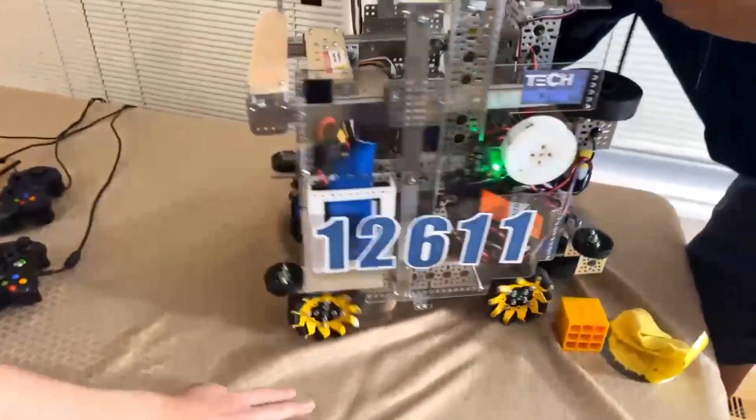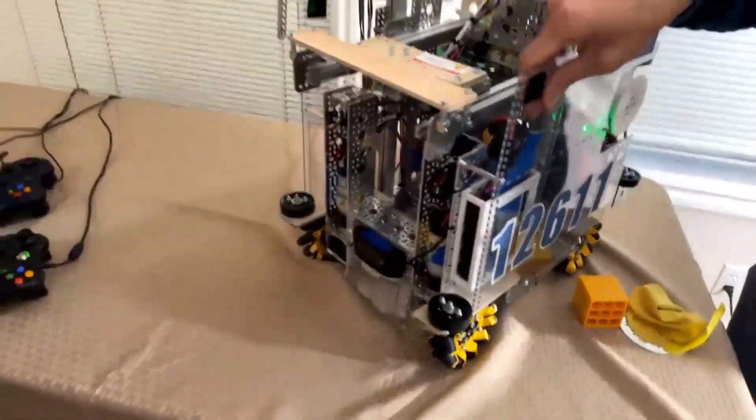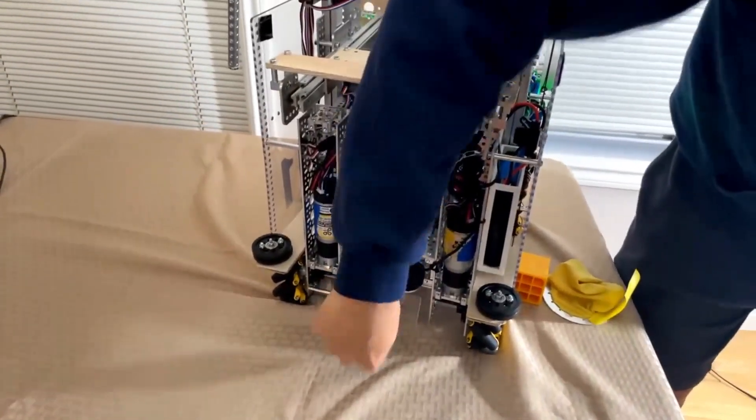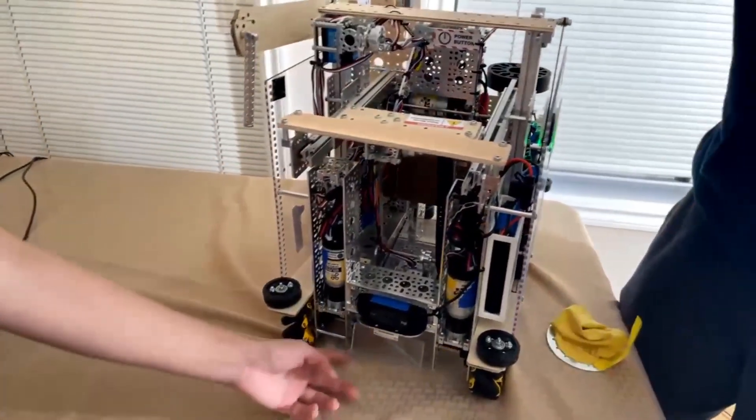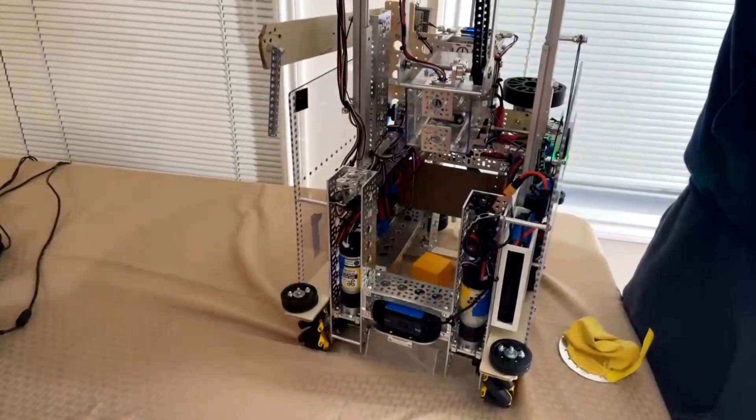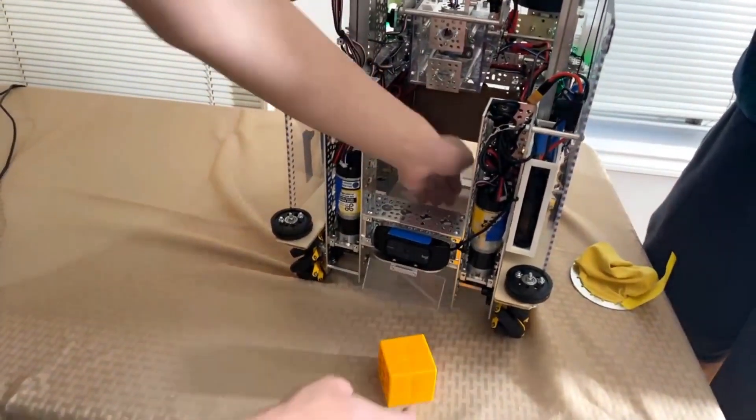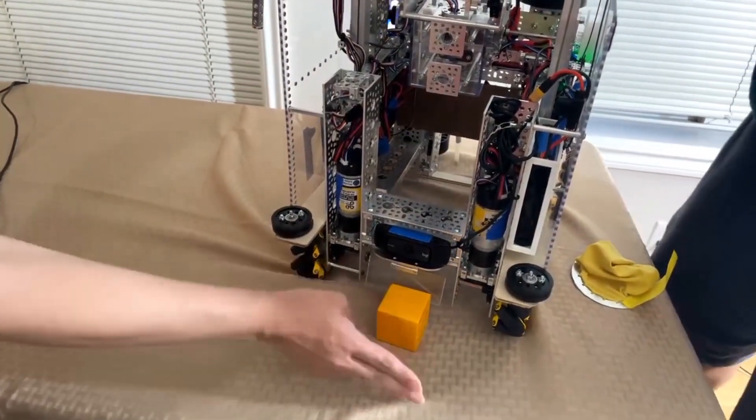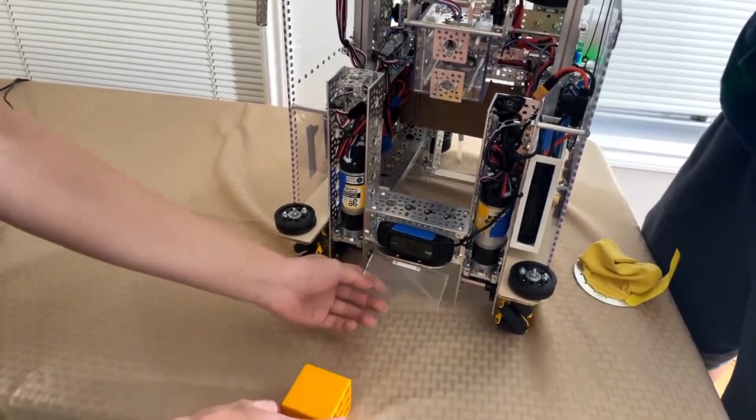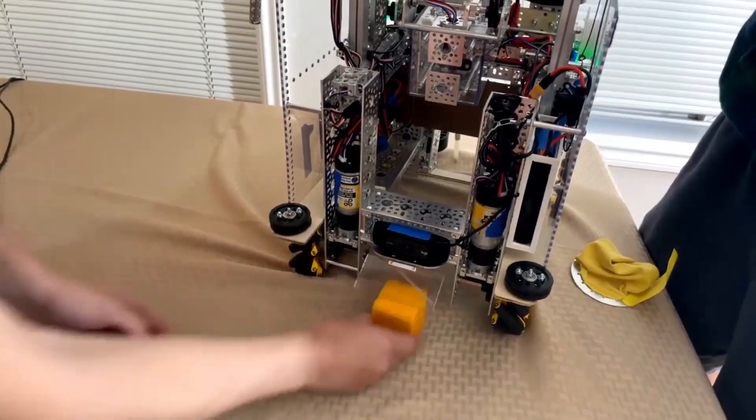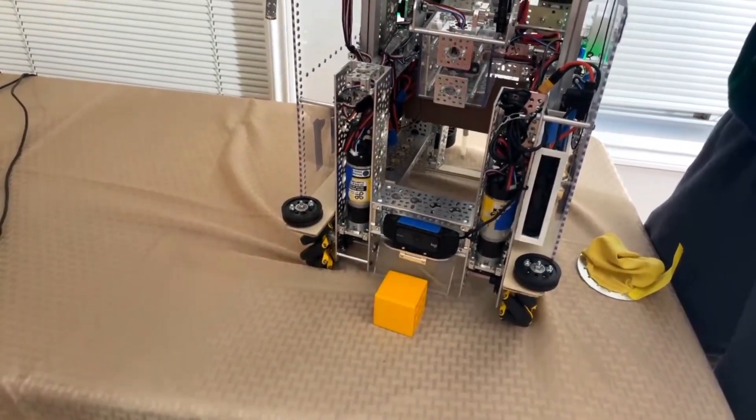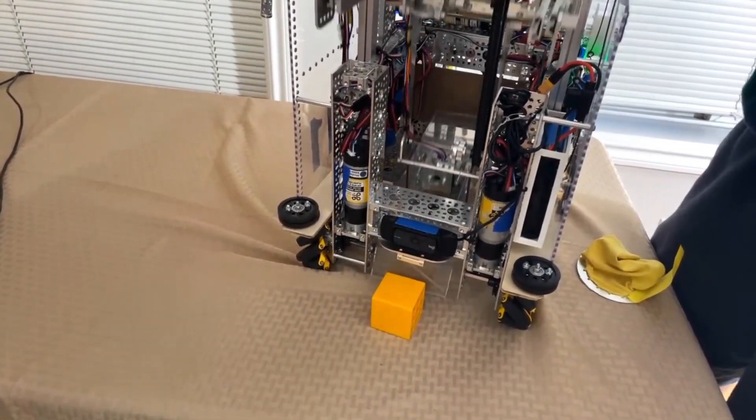Also, another little small caveat that I would like to share with you guys is this one-way door here. What happens is that oftentimes things can get stuck in the central portion of the robot, and that will incur a lot of penalties, which is something that we definitely want to avoid. So this one-way door lets us essentially just drive forwards and the block will get spit out on its own, which is very helpful when trying to mitigate the risk of penalties.